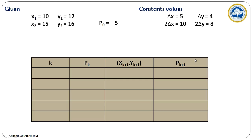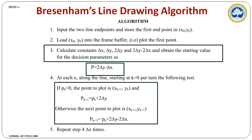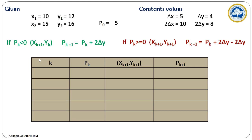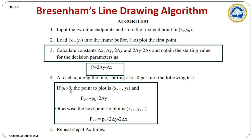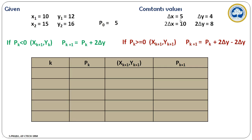Finally, the next decision parameter is Pk+1. To repeat this part at each calculation step, I write this formula here. I also write the starting coordinate value before the table column. We repeat these steps up to delta x times. Here the delta x value is 5, so I write the steps starting from 0 to 4.